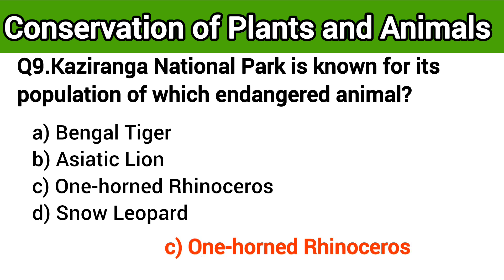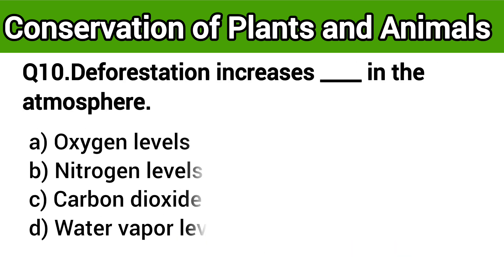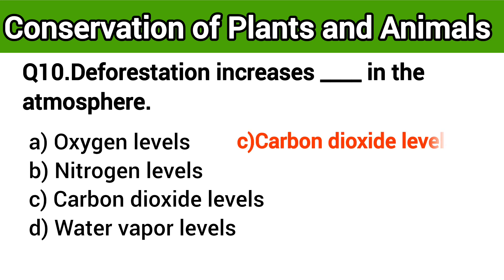The right answer is option C: one-horned rhinoceros. Question number ten: Deforestation increases dash in the atmosphere. The right answer is option C: carbon dioxide levels.